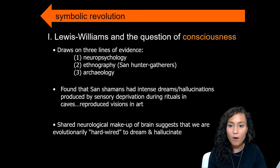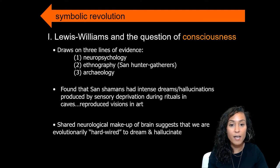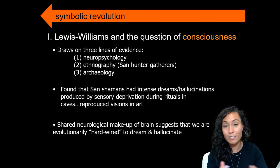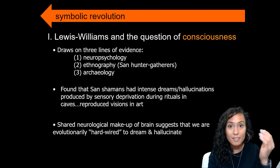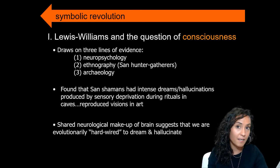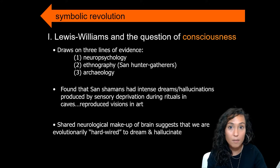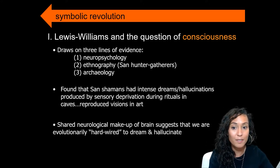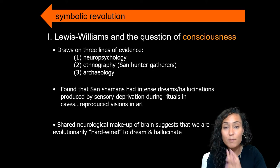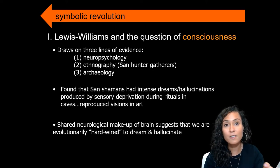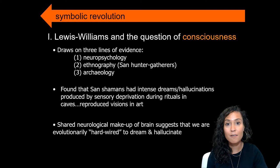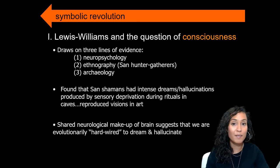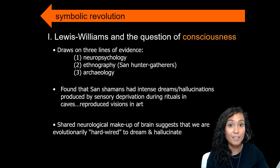Lewis-Williams' argument is based on an understanding that we have a shared neurological makeup across our contemporary society as well as deep into the past, which allows us to make comparisons between the modern brain and the Paleolithic brain. It is these precise neurological similarities that allow us to take ethnographic examples from the San living in Africa today and apply them to people living hundreds of thousands of years in the past in Europe.